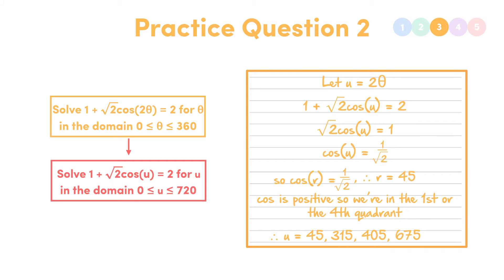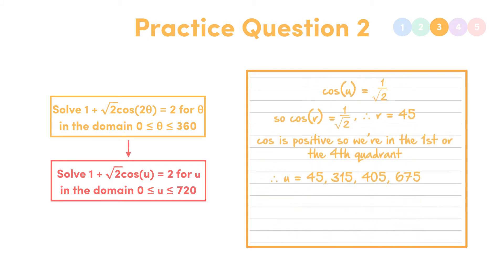Again, no. Because what are we trying to do in the question? Solve for theta. We don't want u. So because u equals 2 theta, that means our acceptable values for theta are u over 2.